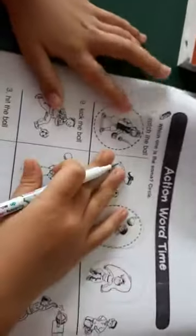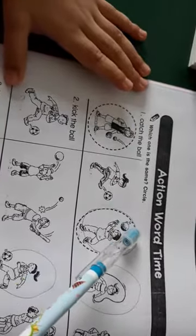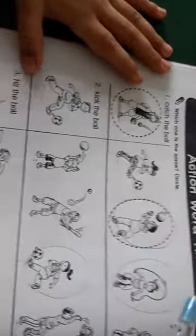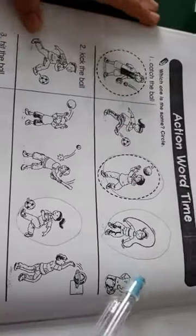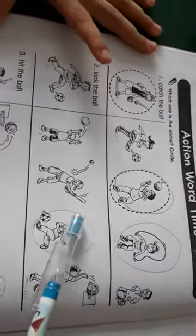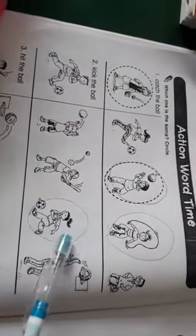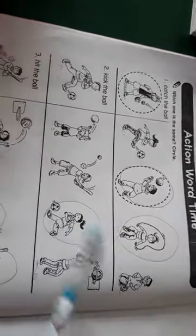She is catching a ball. He is catching a ball. She is skipping, jumping rope. She is kicking a ball.